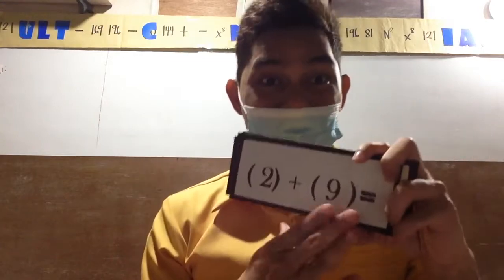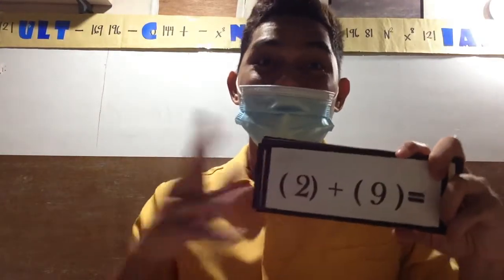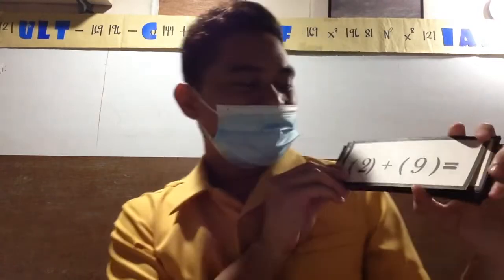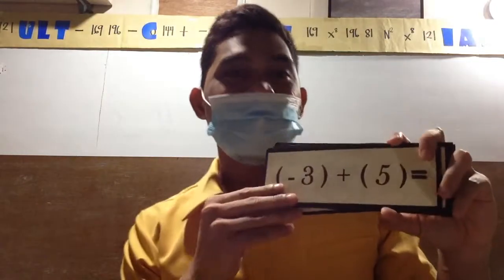Now I have this flash card. If the answer in this flash card is positive, you are going to clap your hands. On the other hand, if the answer in this flash card is negative, you are going to stand up. So 2 plus 9 will be? Very good, everyone clapped. How about this one: negative 3 plus 5? Always remember, when they are unlike signs, you need to subtract then copy the sign of the bigger number. Since 5 is positive, the answer should be positive.